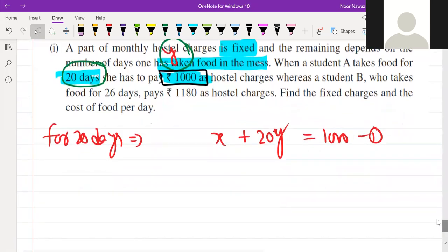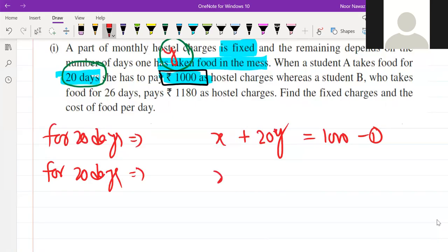Now, if we talk about 26 days, what do we have to do with fixed charges? How much will 26 days? 26. And how much? 1180.